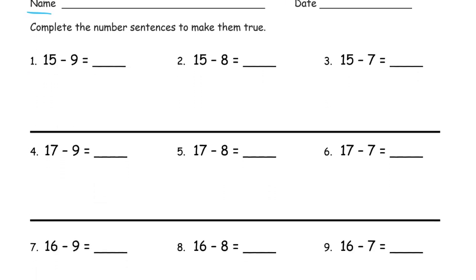So I'm just going to show — that's 10 and 5 — just to show it. And then when I take 9 from that, that's going to be a 1. 1 plus 5 is 6. 15 is 10 and 5. When I take 8 from that 10, 8 and 2 make 10, so there's going to be 2 left. 2 plus 5 is 7.